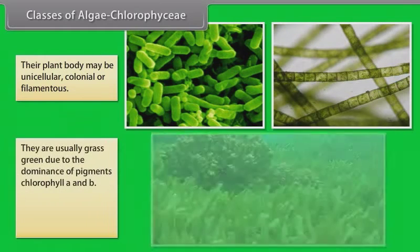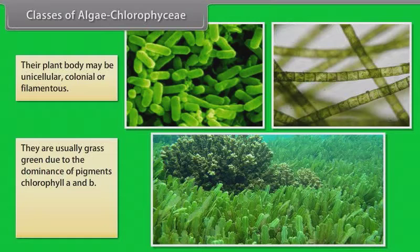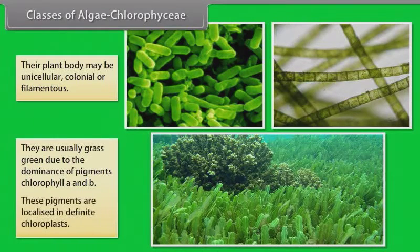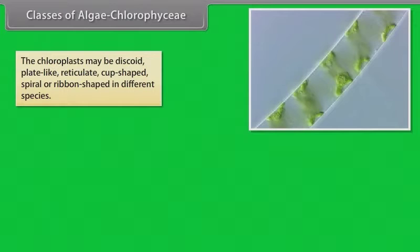They are usually grass green due to the dominance of pigments chlorophyll A and B. These pigments are localized in definite chloroplasts. The chloroplasts may be discoid, plate-like, reticulate, cup-shaped, spiral, or ribbon-shaped in different species.